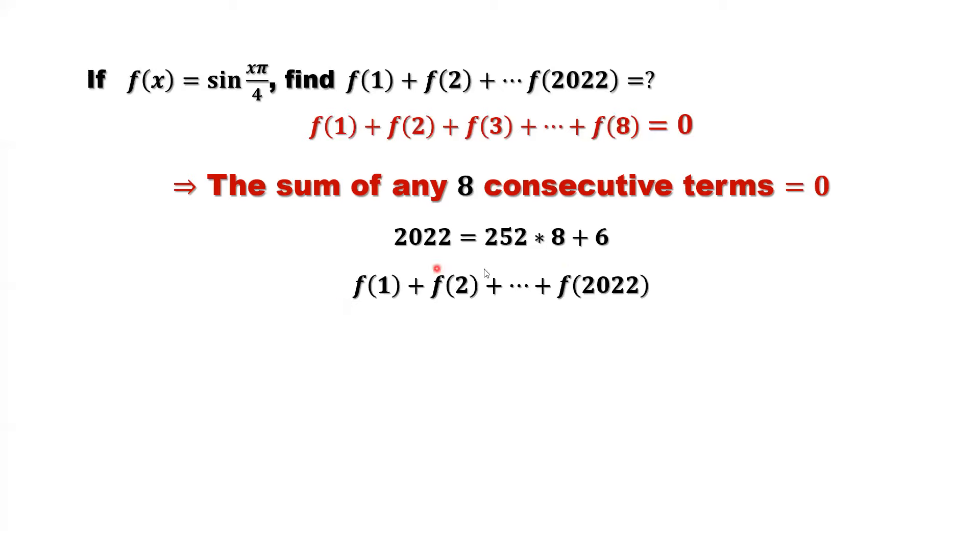So here, we group those items into subgroups, each one with eight items. We count backwards from 2022, the end to the left, eight, one group, second eight group. Then the remaining six items will be the six items from very beginning, which is f of 1, f of 2, until f of 6. This is based on this result. The sum of any eight consecutive terms equal to zero. So we are counting backwards from the end to the front, because the remainder is six. We have six here.